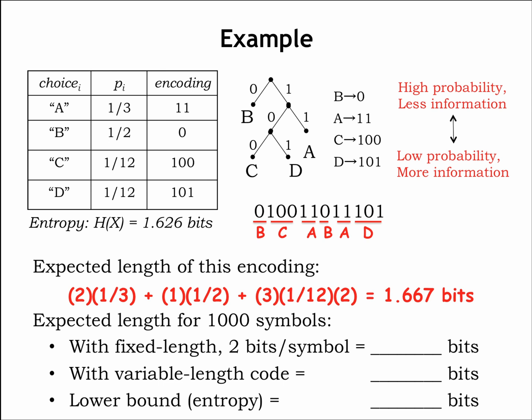How did we do? If we'd used a fixed-length encoding for our 4 possible symbols, we'd have needed 2 bits each. So we'd need 2,000 bits to encode 1,000 symbols. Using our variable-length encoding, the expected length for 1,000 symbols would be 1,667. The lower bound on the number of bits needed to encode 1,000 symbols is 1,000 times the entropy H, which is 1,626 bits. So the variable-length code got us closer to our goal, but not quite all the way there.